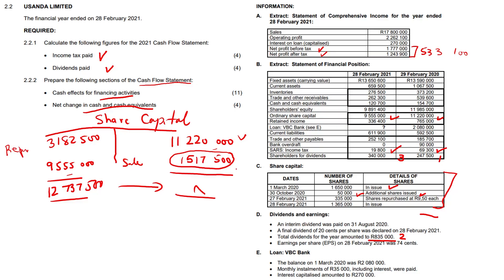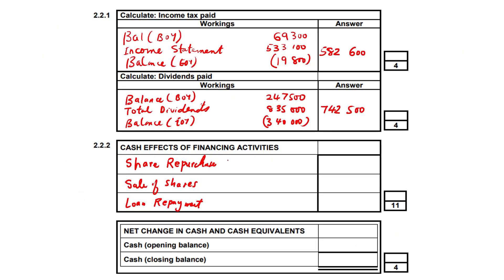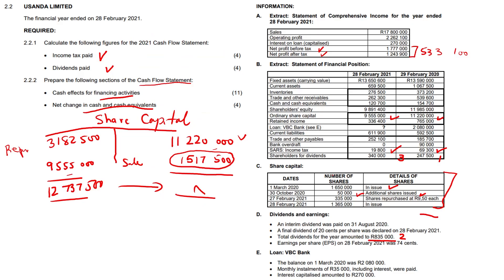That is our share capital sale of shares and purchase of shares. So now let's plug that into our work and go back to the answer sheet. Share repurchase: 3,182,500. The sale of shares from our workings: 1,517,500. Do remember the sale of shares was a positive figure, while the share repurchase was a negative figure. The loan repayment — that was also a taxing calculation.